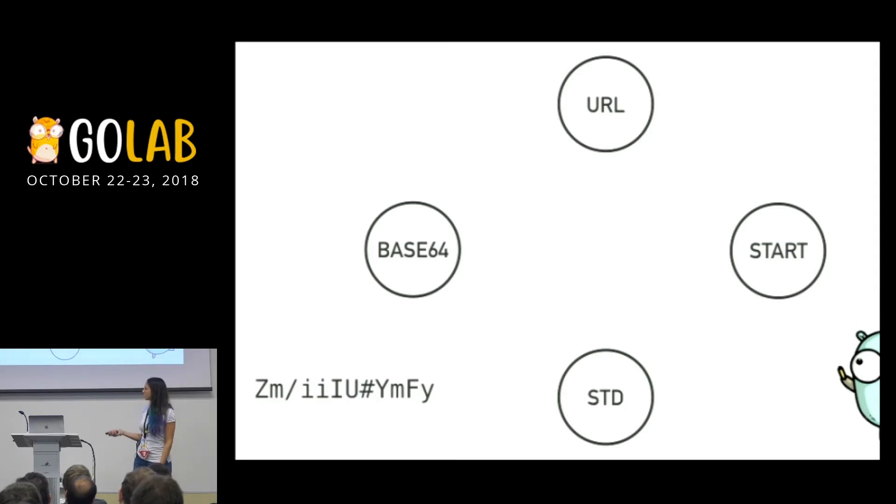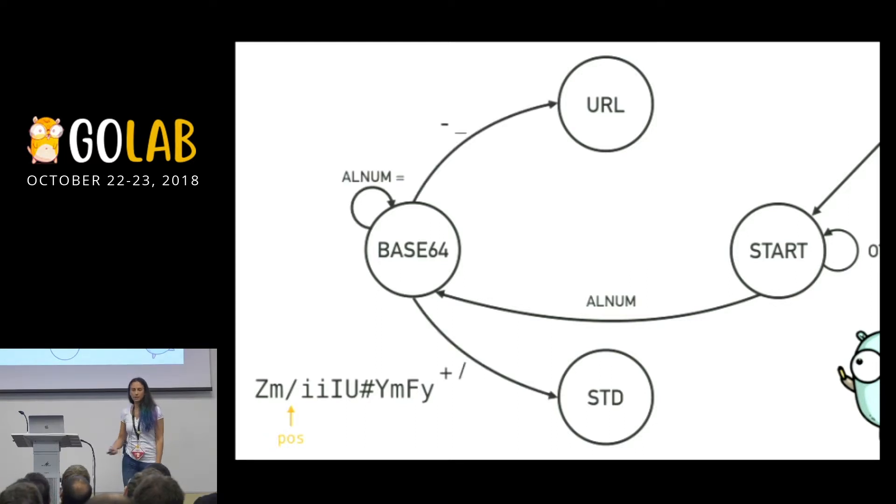So for this example, for the string in the corner, we start at the start state. We're analyzing the first character. And then we see that character is alphanumeric, so we move to the Base64 state. If it was not an alphanumeric character but it was like a symbol, not valid symbol, we would keep cycling through the start state until we find a valid character. Then we keep going and we find the slash. This way we point towards a standard state in this case. And now we are in the standard state. Keep going, more alphanumeric letters or padding characters. That's fine, we still are in the standard state and we keep analyzing the string.